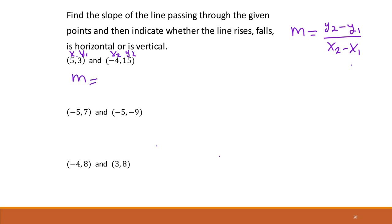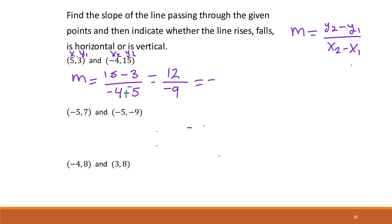So m equals 15 minus 3 over negative 4 minus 5. 15 minus 3 gives a positive 12. I can write the denominator as plus a negative, making it negative 9. Pulling the negative to the front, both 12 and 9 are divisible by 3: 12 divided by 3 is 4 and 9 divided by 3 is 3. So our slope here is negative 4 thirds.